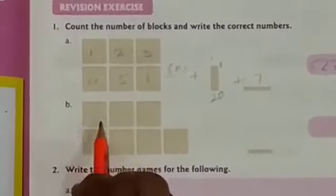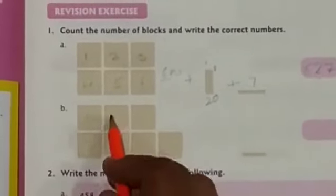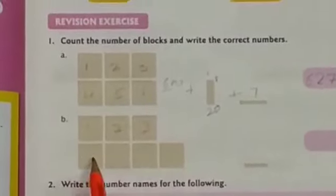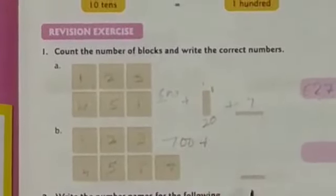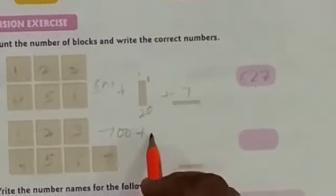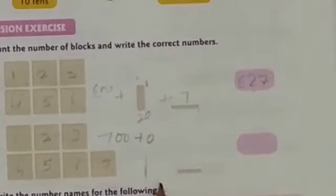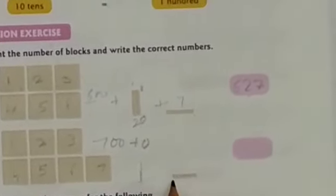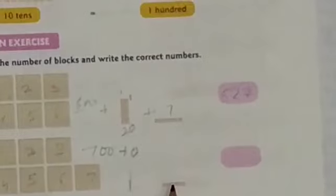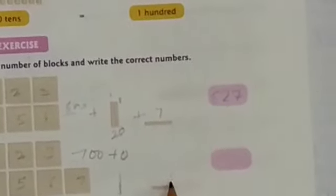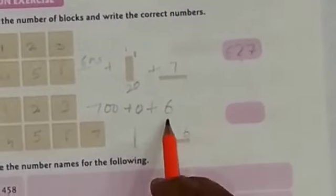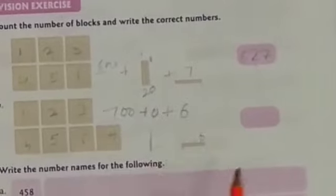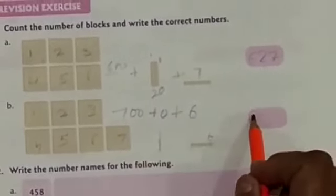Again, I will show you another example. Here, 7 cubes of 100 blocks: 100, 200, 300, 400, 500, 600, 700. There is no tens place, so we put 0 there — no pillars. But there are loose single blocks: 1, 2, 3, 4, 5, 6. So 700 plus no tens plus 6 equals 706.